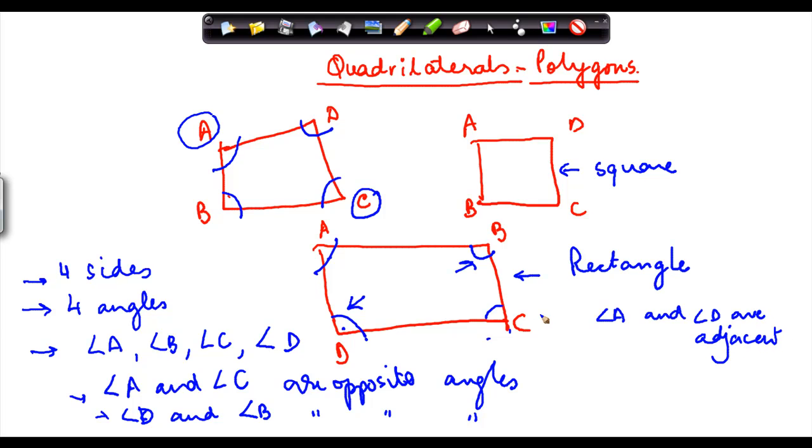Similarly, angle B and angle C are adjacent. So these are the properties of a quadrilateral.